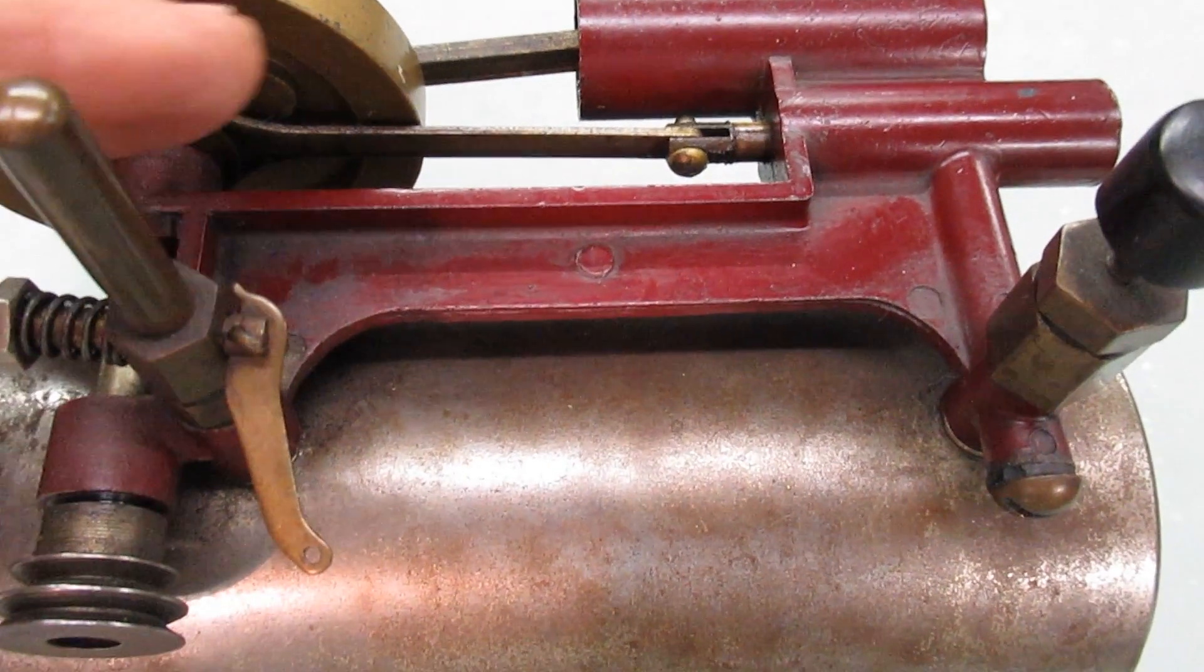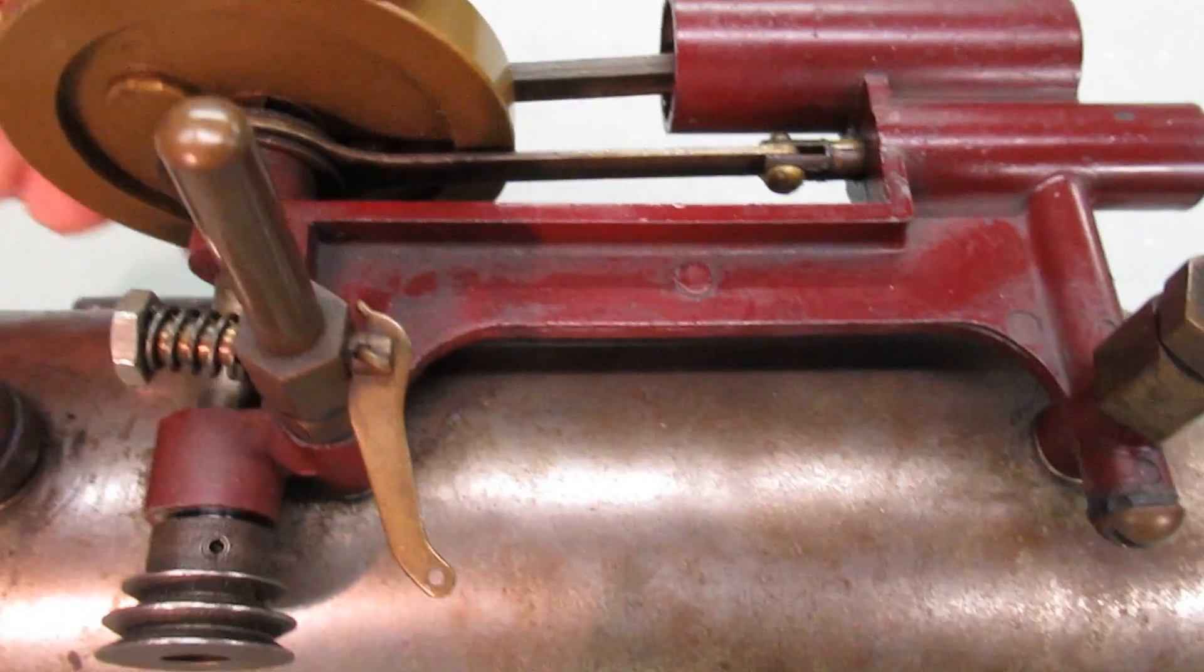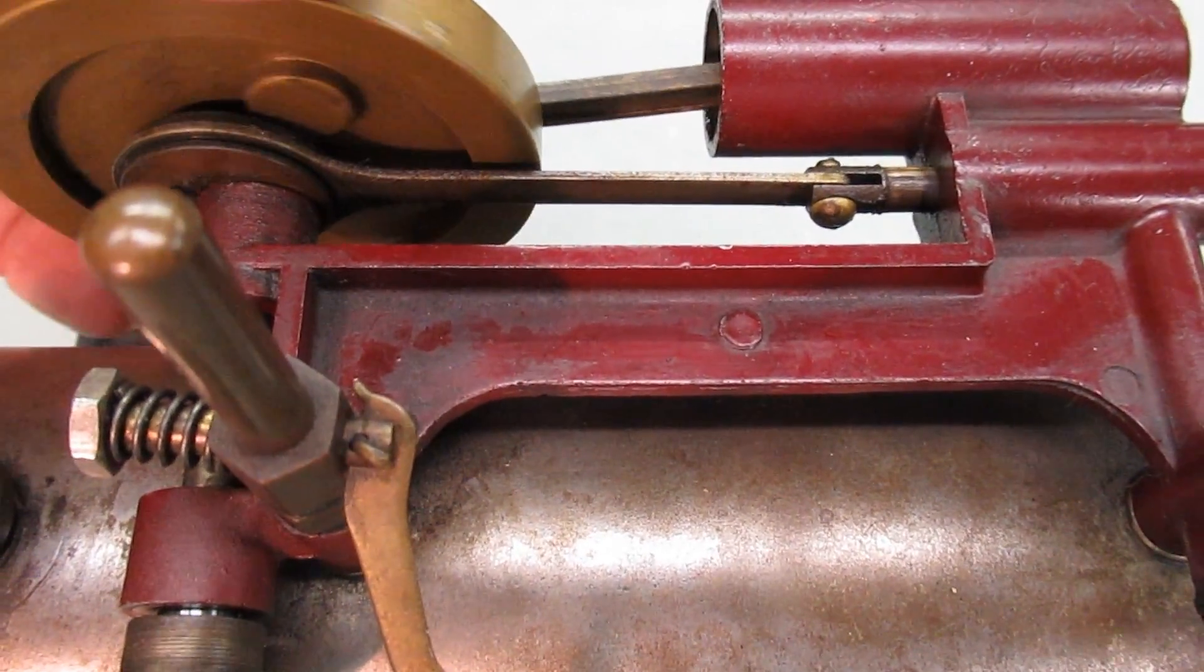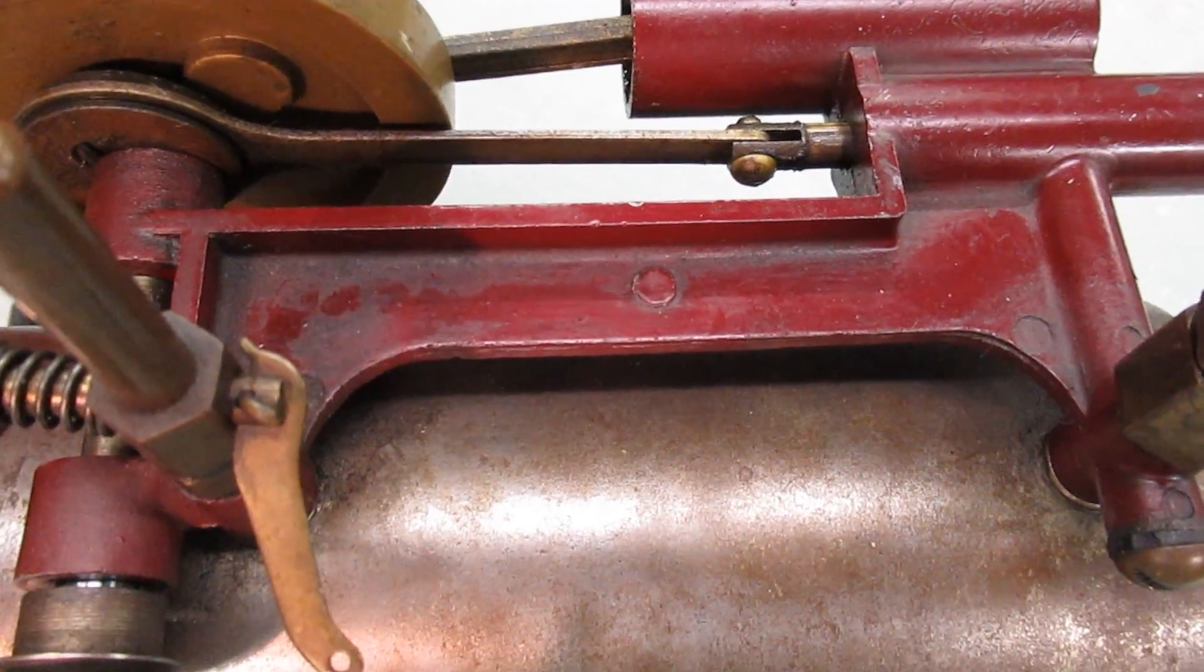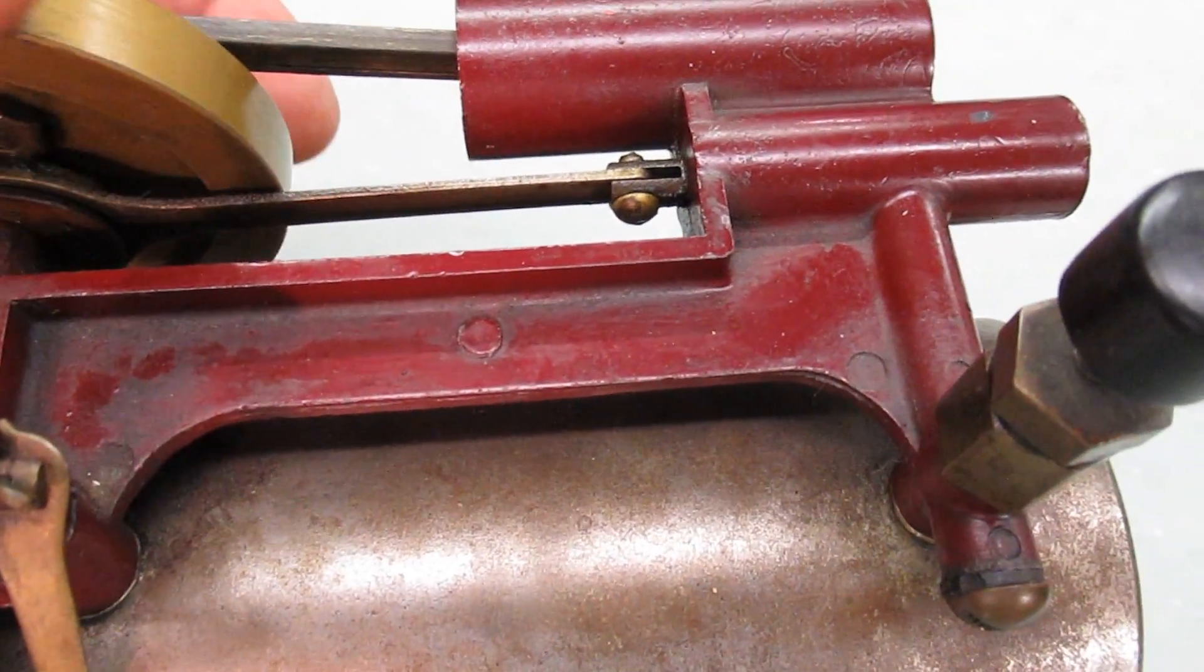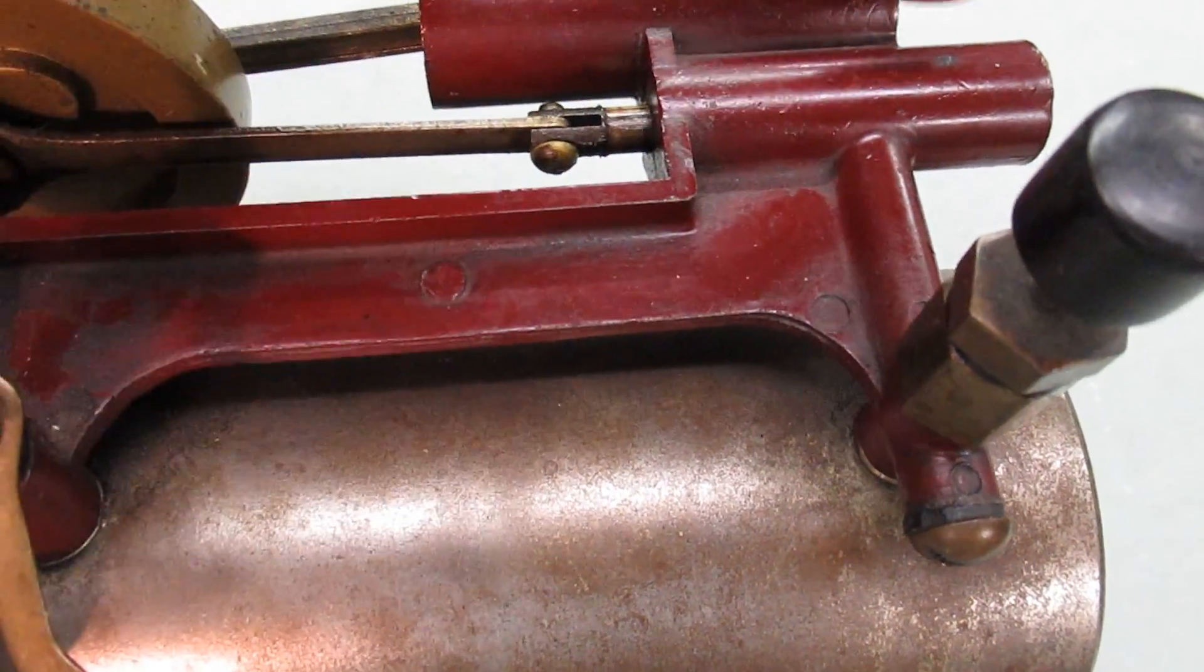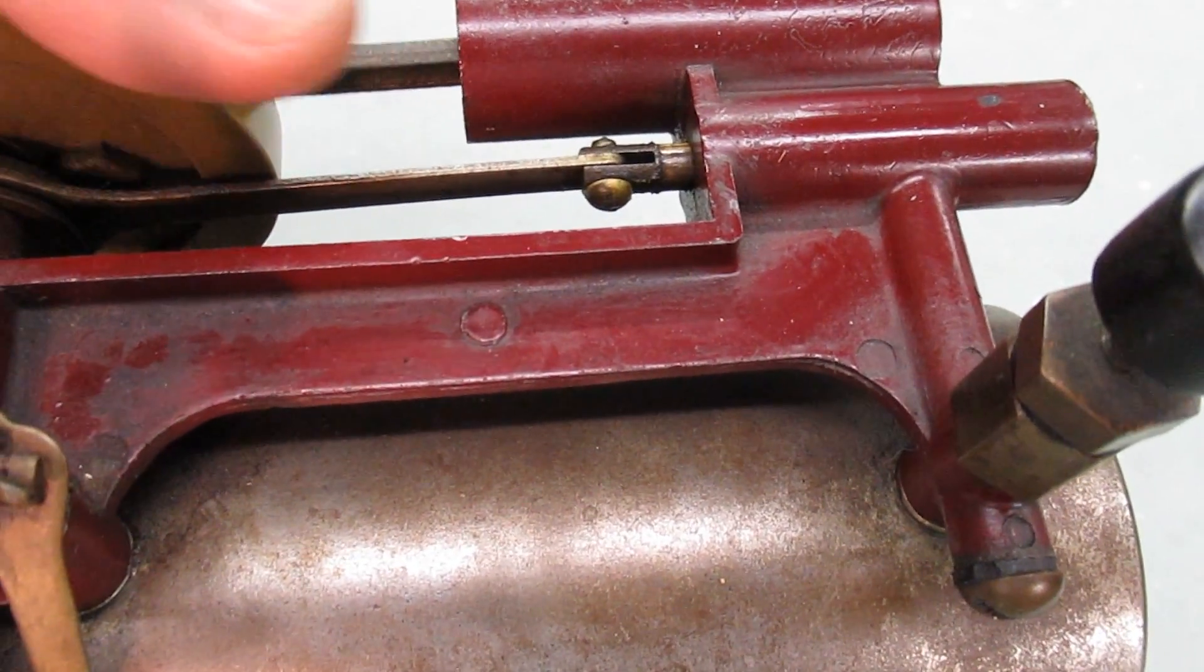The way this works is this valve right here opens and closes with a very unique setup here on the left, as you can see. As that goes around, that concentric opens and closes the valve, allowing the steam to come through here, into here, and then into the main piston, which goes in and out.